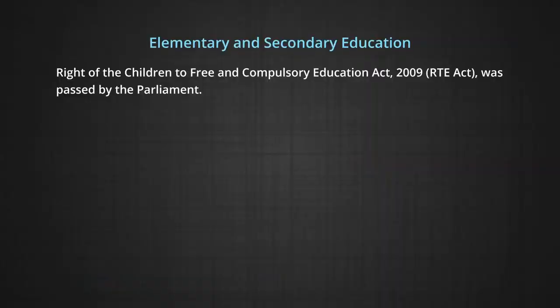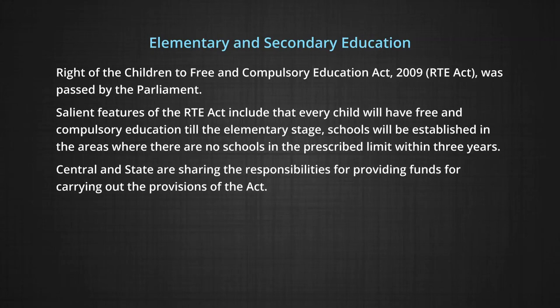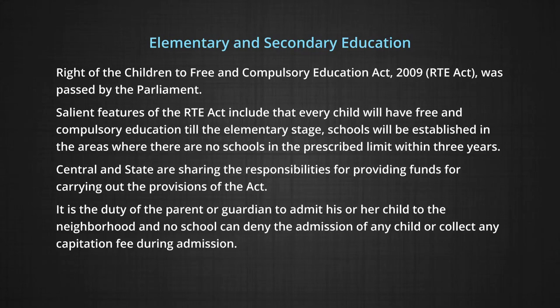The Right to Free and Compulsory Education (RTE) Act 2009 was passed by Parliament. Salient features include: every child will have free and compulsory education till elementary stage; schools will be established in areas with no schools within three years; central and state governments share responsibilities for providing funds; it is the duty of the parent or guardian to admit the child to the neighbourhood school; and no school can deny admission to any child or collect any capitation fee during admission.